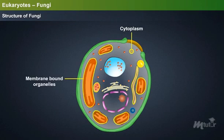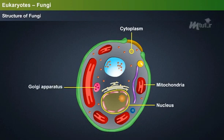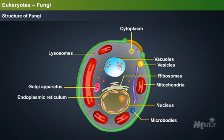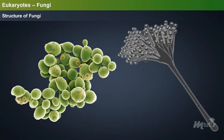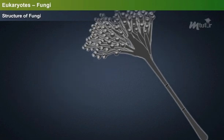Cytoplasm contains several membrane-bound organelles such as nucleus, mitochondria, Golgi apparatus, ribosomes, vacuoles, vesicles, microbodies, endoplasmic reticulum and lysosomes. Single-celled fungi are called yeast, while multicellular fungi are called molds.